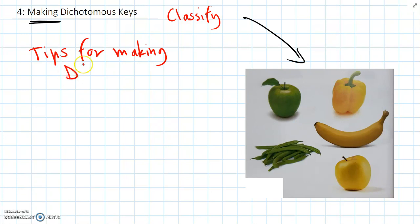Tips for making dichotomous keys. Firstly, when we're choosing features of our objects to classify, we want to choose clear and obvious features that everyone can understand.